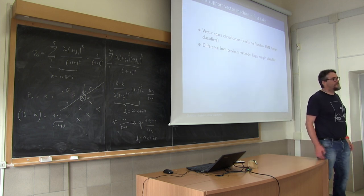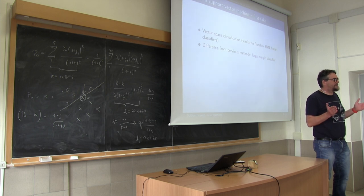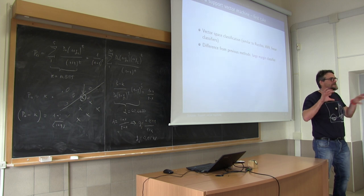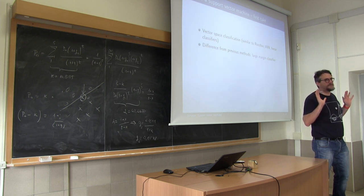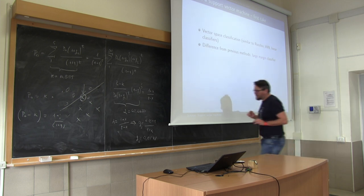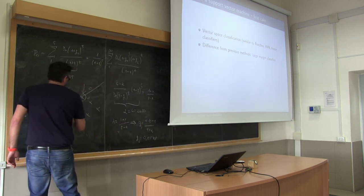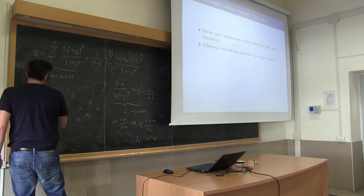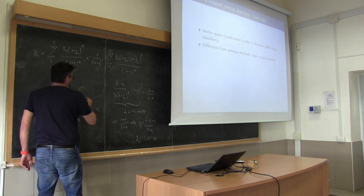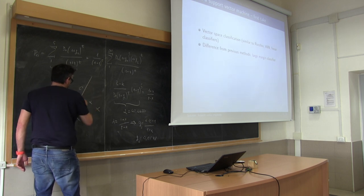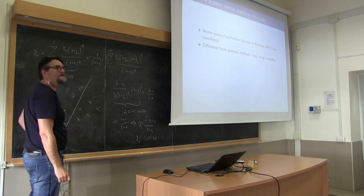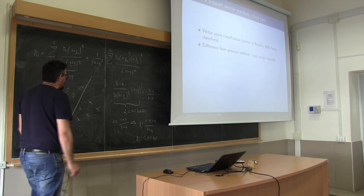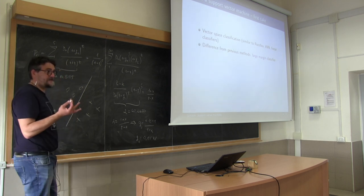We want to define a region that is as big as possible that separates the two classes of documents. That's the whole idea. Let's see in this example what are possible regions. This is an absolutely okay classifier, and the region that separates the two classes is linear in this case — it will be something like this.